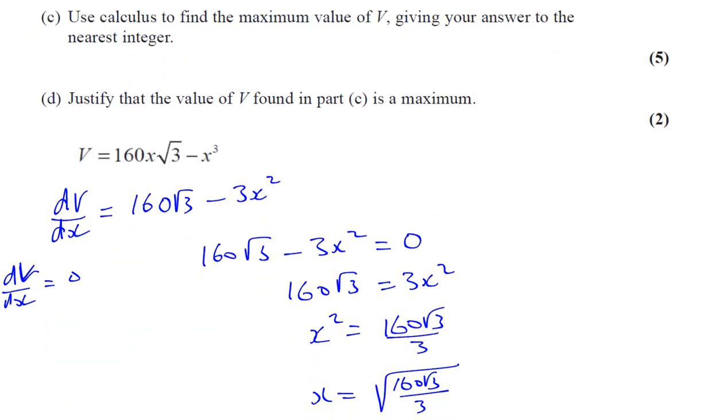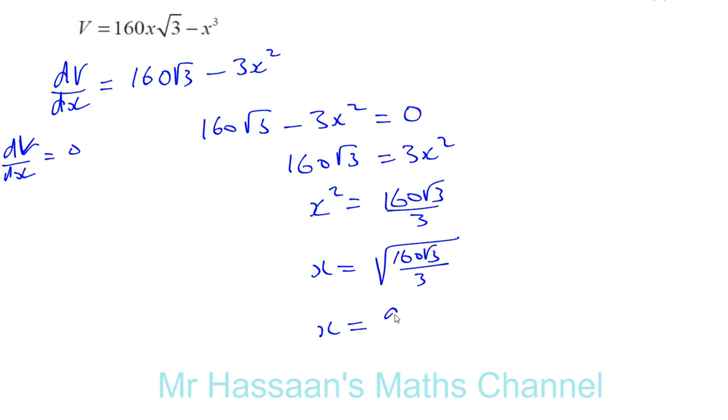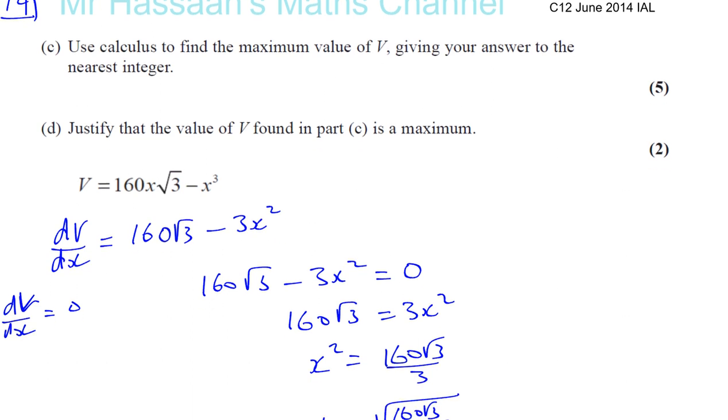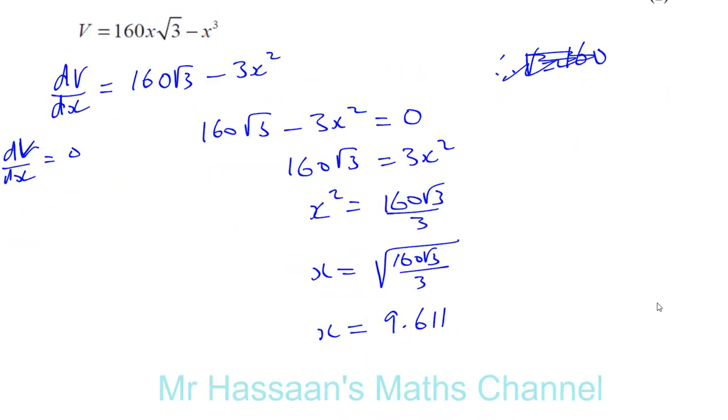It's the nearest integer. So first of all, X is 9.611. Leave it as that because that's not what we're required. We're required to find the volume. Okay, so we'll say, okay, therefore the volume will be 160 times... Let me do it down there, we've got more space.